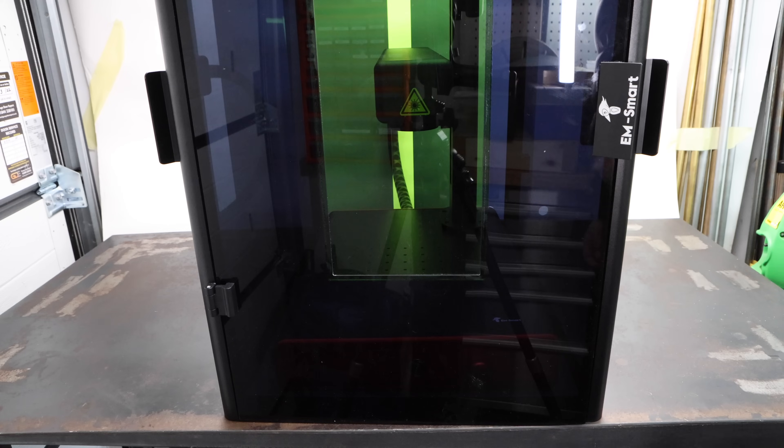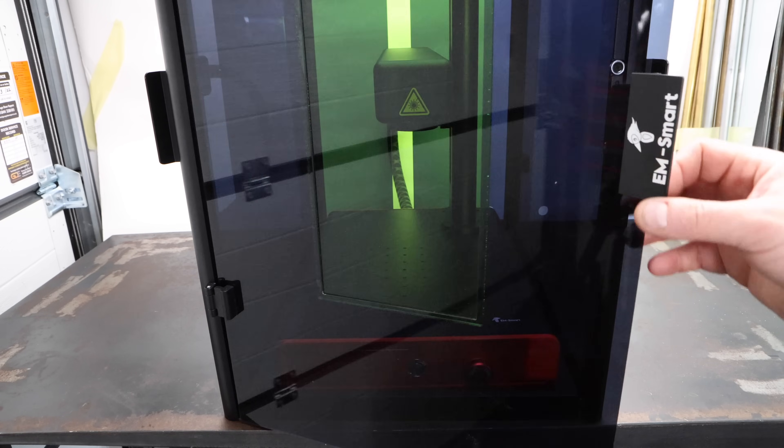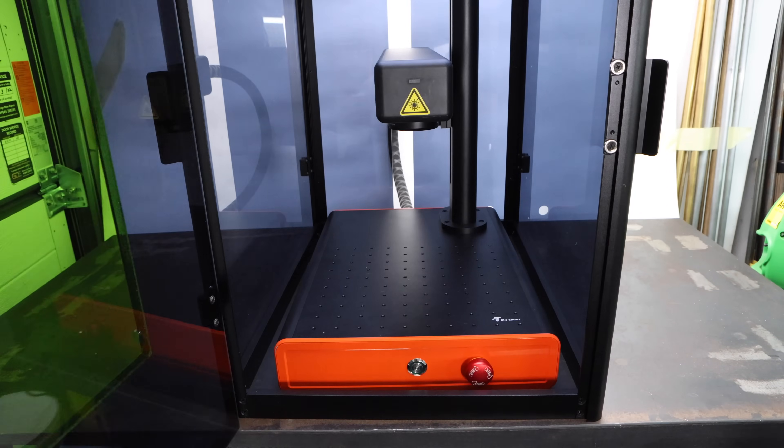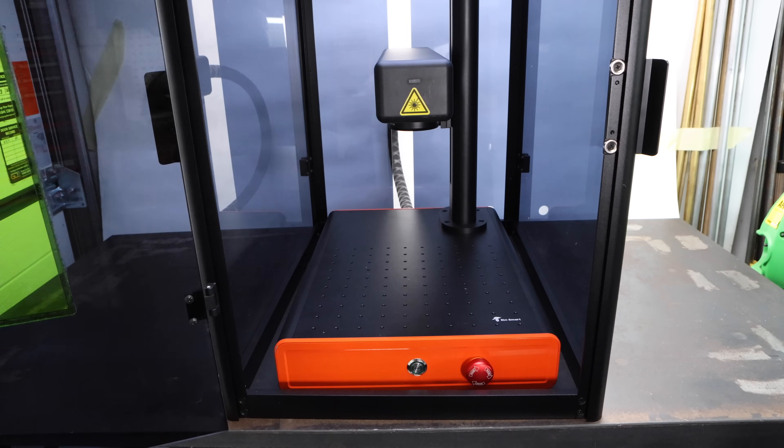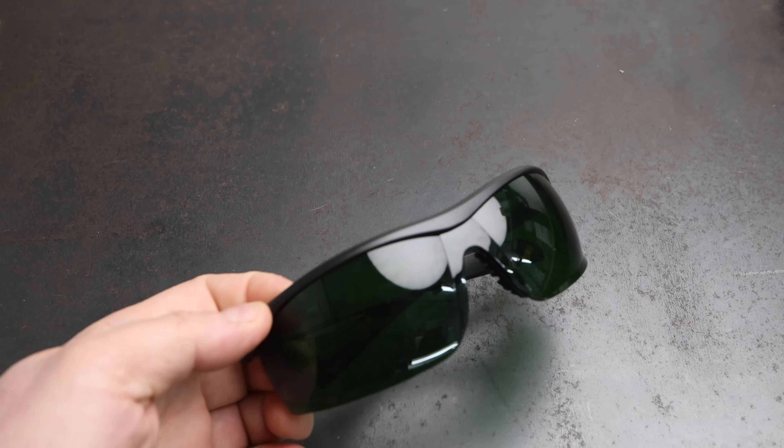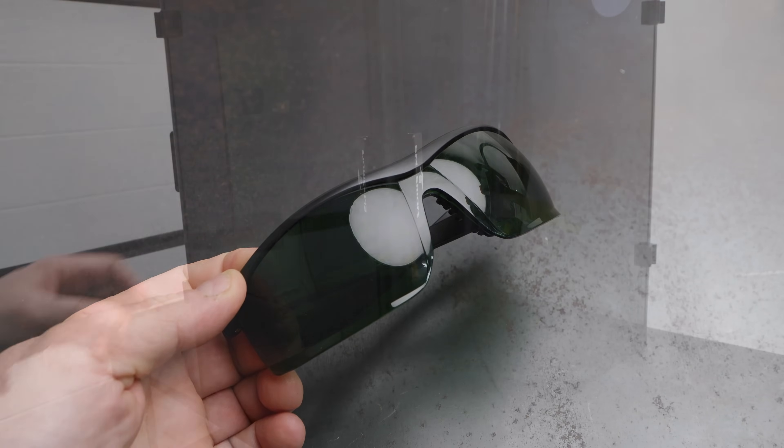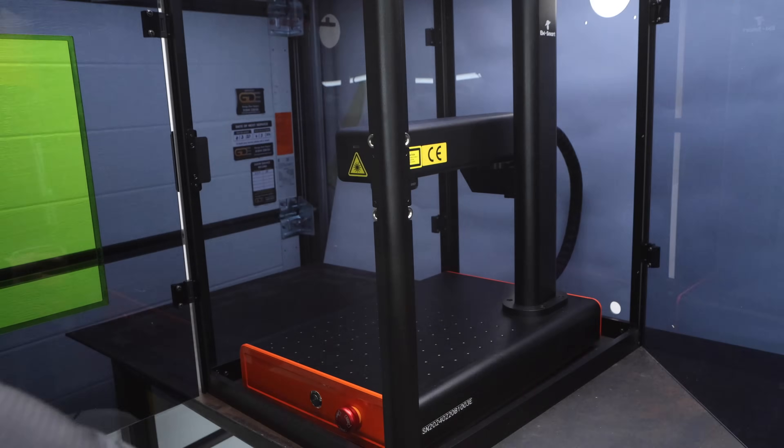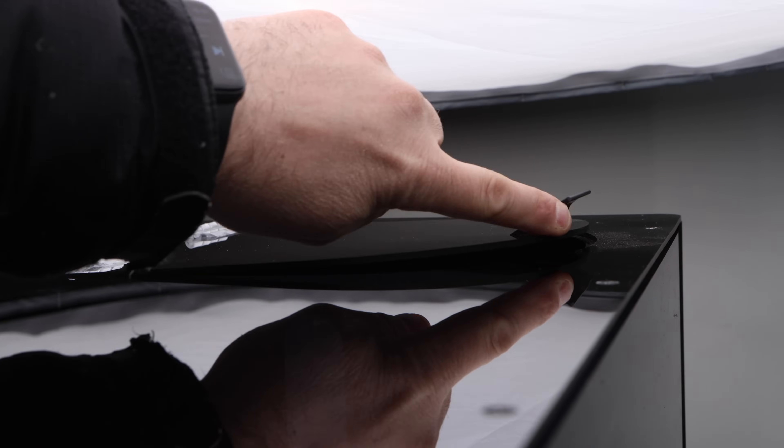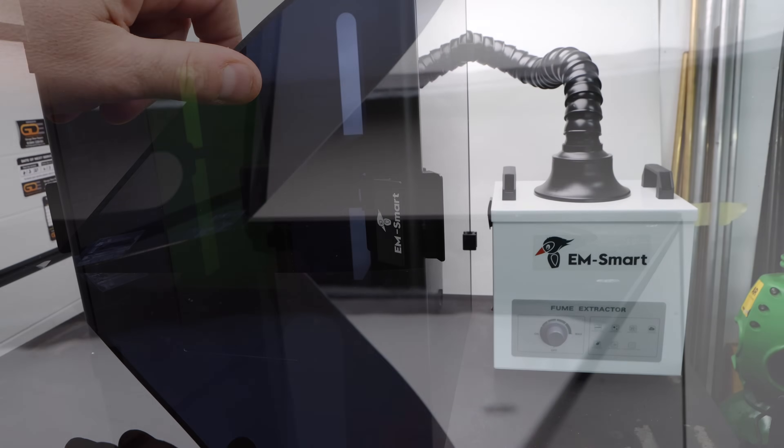They also make this Perspex enclosure with the laser safety glass, which keeps the machine protected and also helps to contain those fumes. Even if using the enclosure, you should still continue to wear your laser safety glasses, which are included with the machine. It's got really good access all around via these magnetic doors and even has a hatch in the top to allow access for the focusing mechanism.